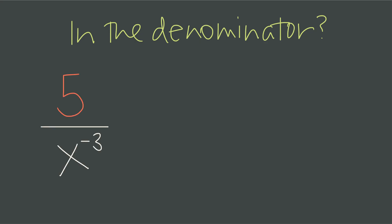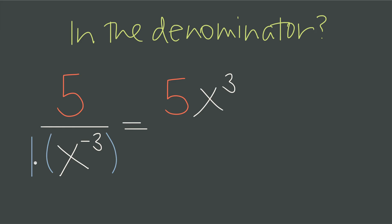What happens if the negative exponent is in the denominator instead of in the numerator? The instruction is still the same — that negative exponent directs you to take the reciprocal. So instead of moving a term from the numerator to the denominator, when it's already in the denominator, we move it from the denominator to the numerator. The coefficient of 5 stays right where it is, and x to the negative 3 moves up to the numerator. We think of x to the negative 3 as being multiplied by an invisible 1 — that 1 stays in the denominator, but dividing by 1 doesn't change the value, so we simplify and write the result as 5x to the positive 3.